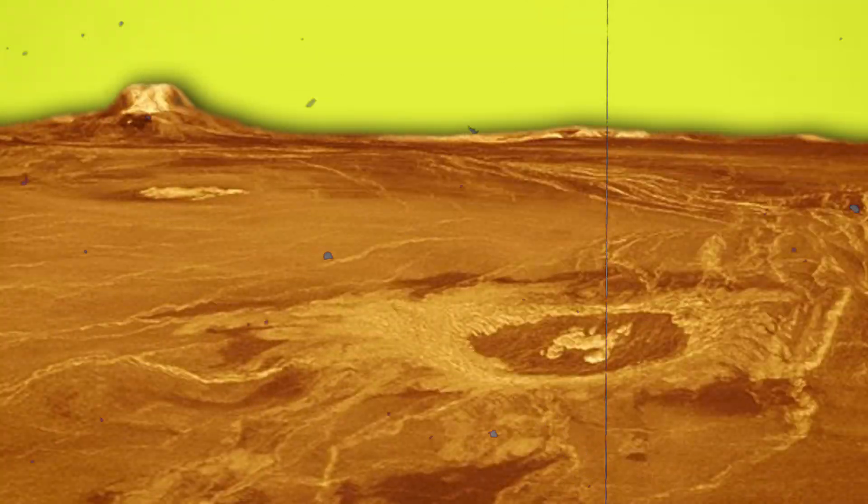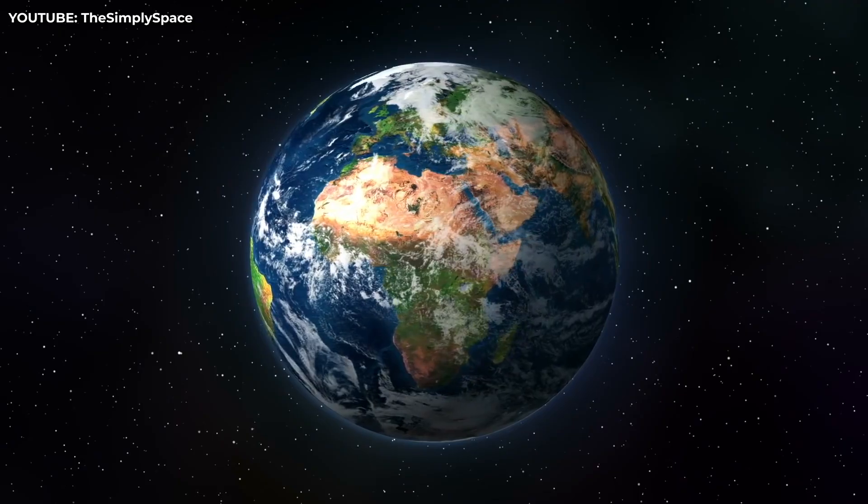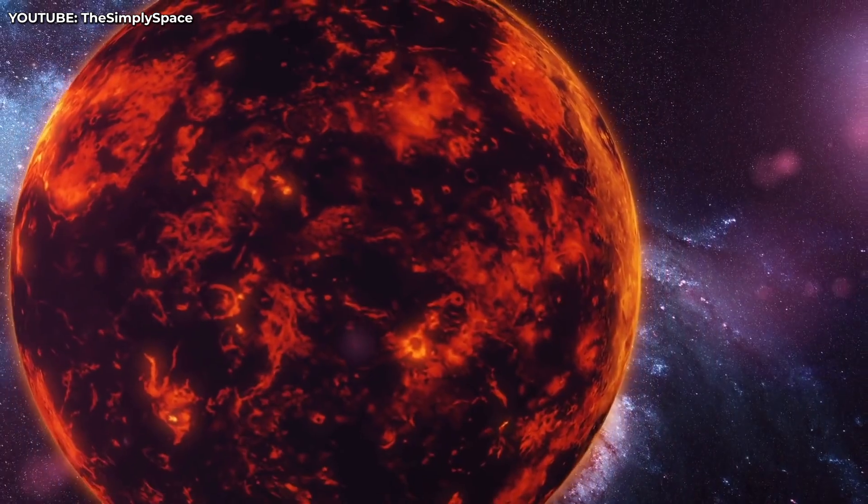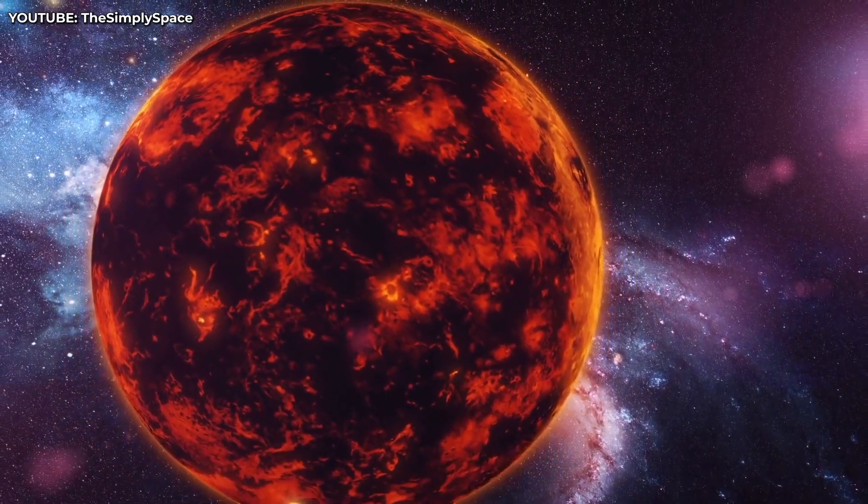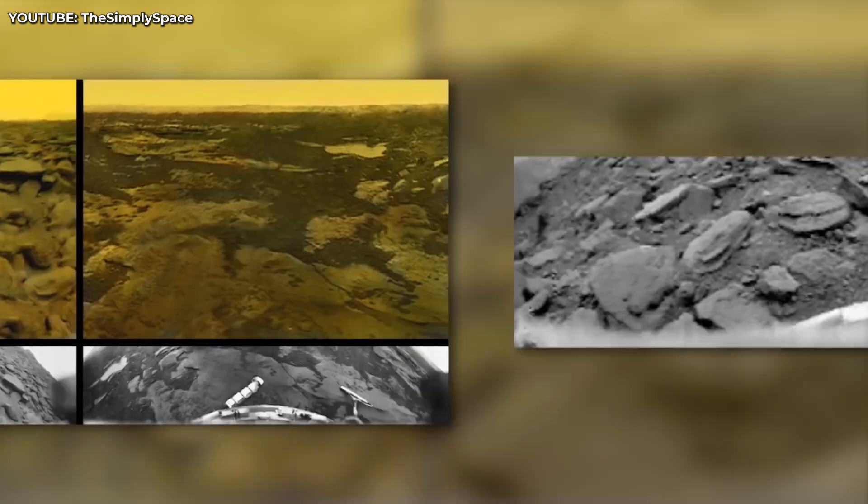The images, however, were good enough to paint a picture of a planet which had an eerie similarity to Earth in terms of size, but was located almost 61 million kilometers away. Venera 9 showed terrain filled with rocks, and Venera 10 showed traces of frozen lava flows.